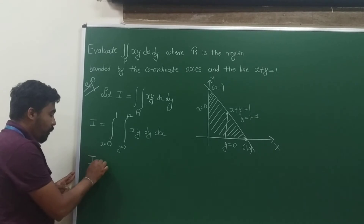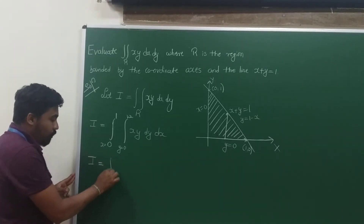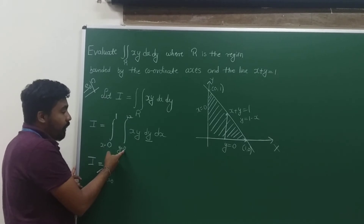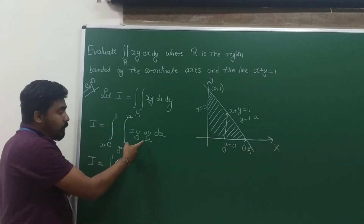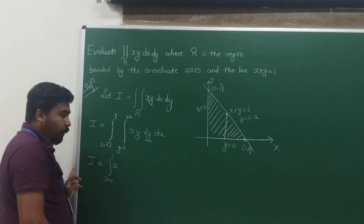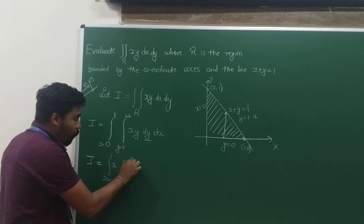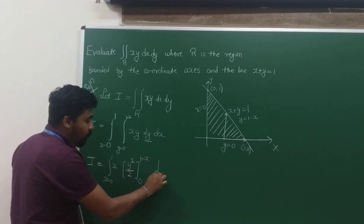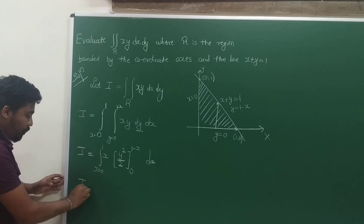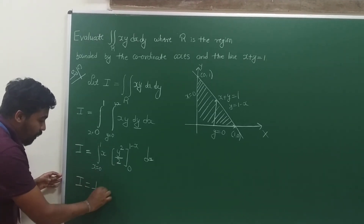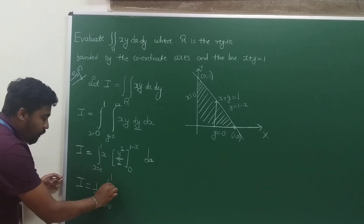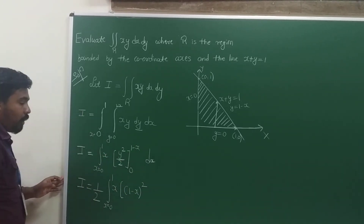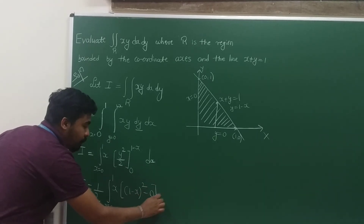Now this is normal integration. I = integral from x=0 to 1. Since we are integrating with respect to y first — because the limits are given in terms of x, meaning these are y limits — x acts as a constant. The integration of y with respect to y is y²/2. Applying the limits 0 to 1−x gives: (1/2) · integral from 0 to 1 of x·(1−x)² dx.